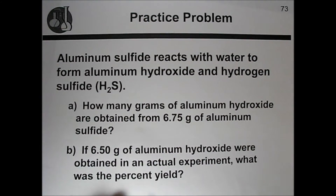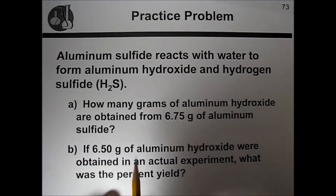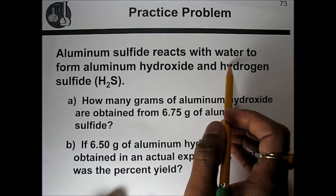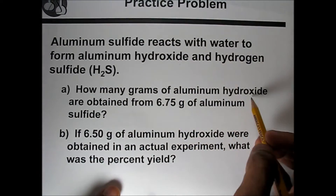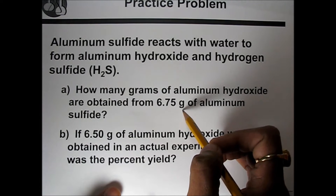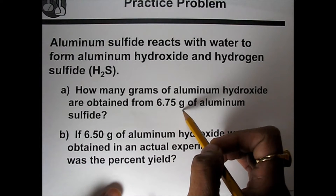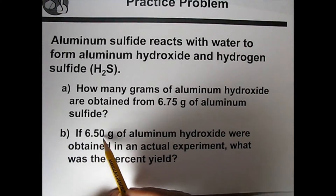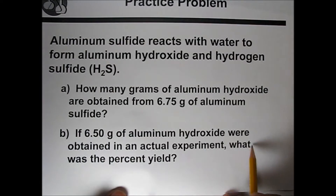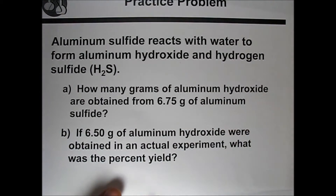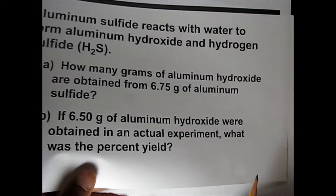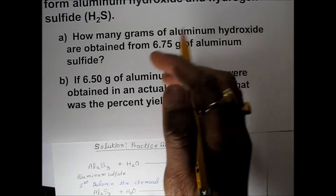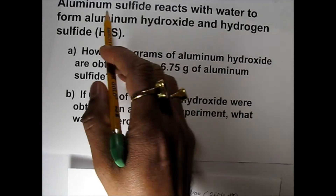We will see one practice problem: aluminum sulfide reacts with water to form aluminum hydroxide and hydrogen sulfide. How many grams of aluminum hydroxide are obtained from 6.75 grams of aluminum sulfide? And if 6.50 grams of aluminum hydroxide were obtained in an actual experiment, what is the percentage yield? We will go through this calculation step by step.